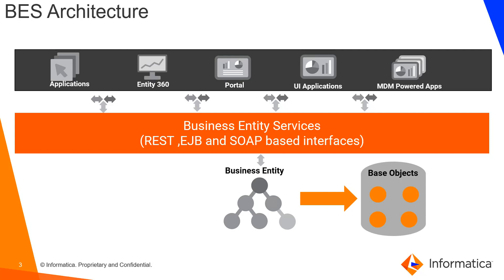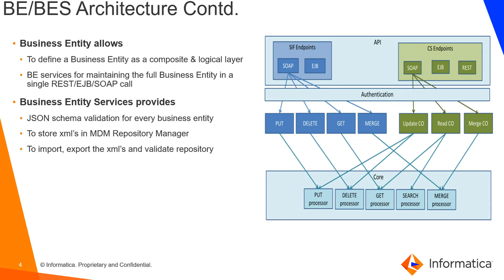This slide continues the architecture. The business entity allows us to define a business entity as a composite and logical layer in the processing tool. It allows us to maintain the full business entity in a single call — whether REST, EJB, or SOAP — to create, edit, or search records. Business Entity Services also provides JSON schema validation for every business entity and stores XMLs in the MDM repository config table (CREPOSE COCS), where you can access all XML content of composite services, transformations, or searchable objects.